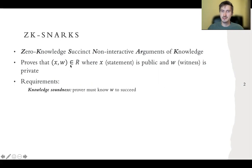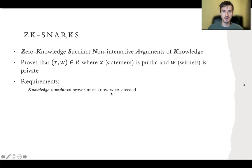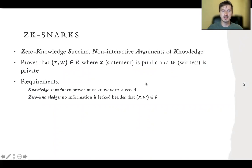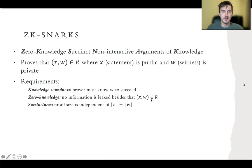From a security perspective, we want to satisfy knowledge soundness — this means that a prover who is able to convince the verifier should know a witness w. We want zero knowledge, which essentially means that the only information we leak is that x and w are in the relation, and we don't even reveal the witness. And finally, we want succinctness, which means the proof size is independent of the size of the statement and the witness.